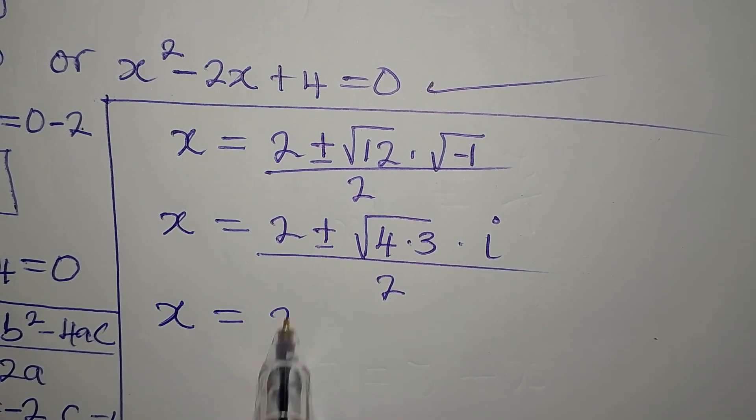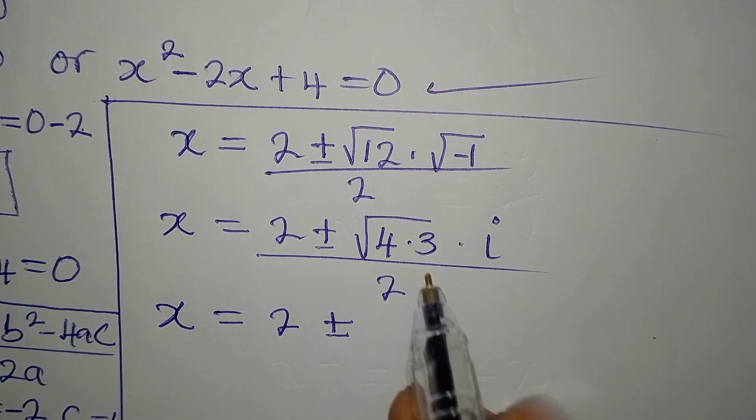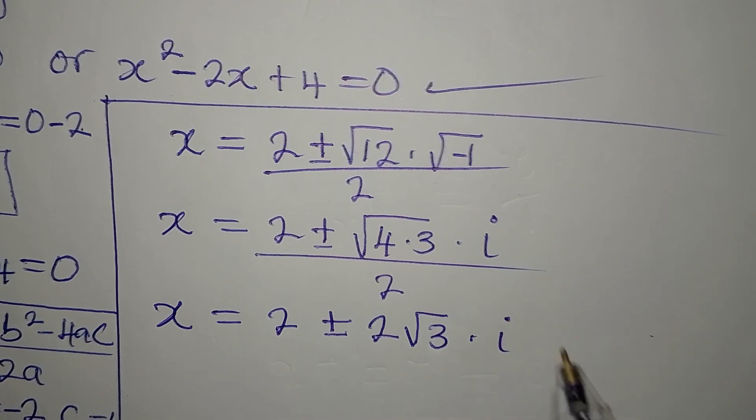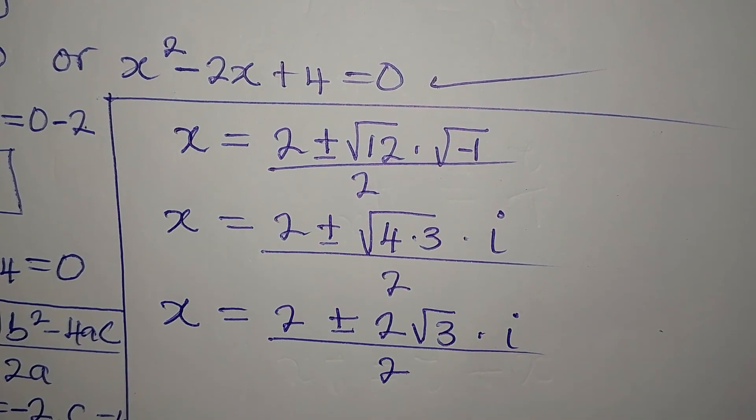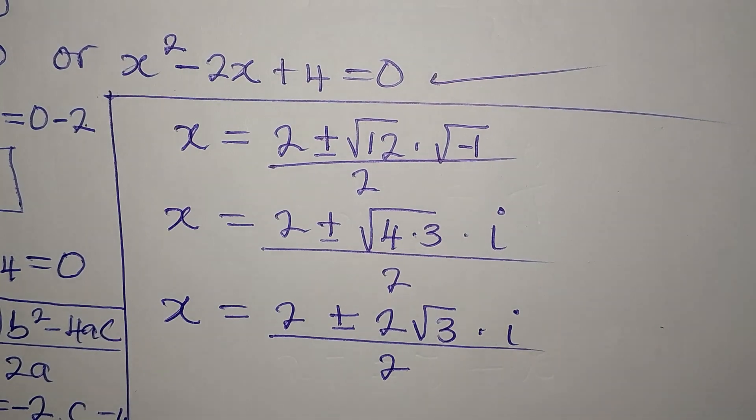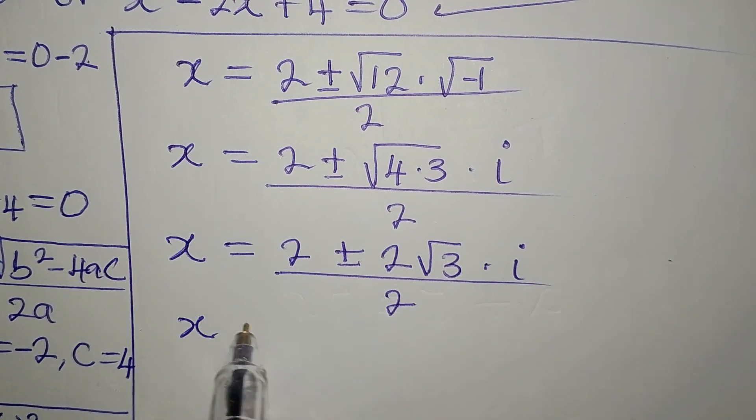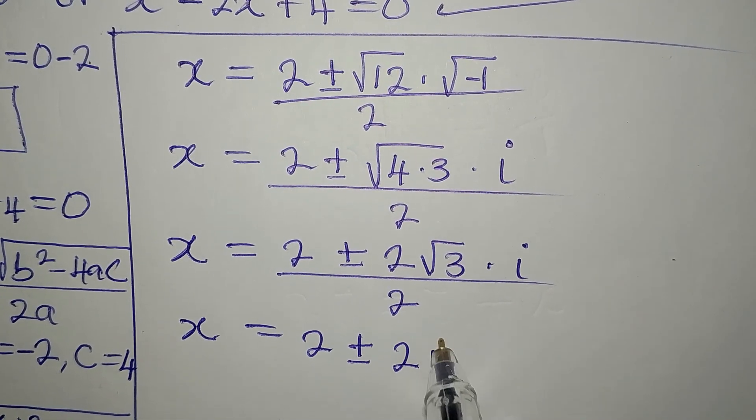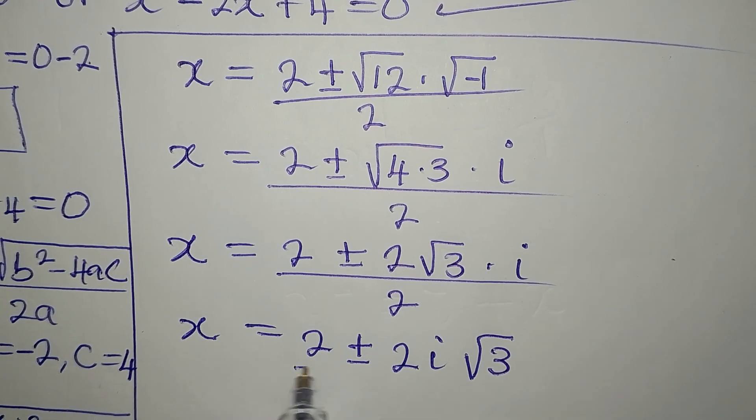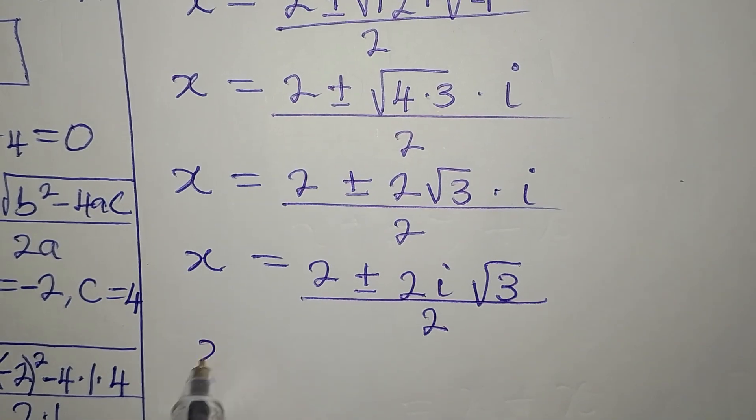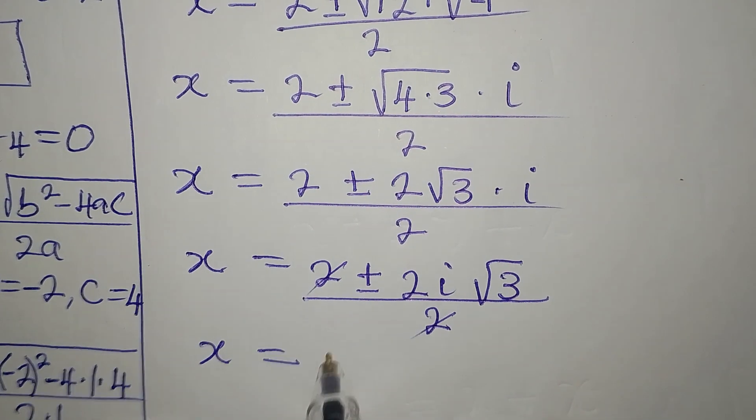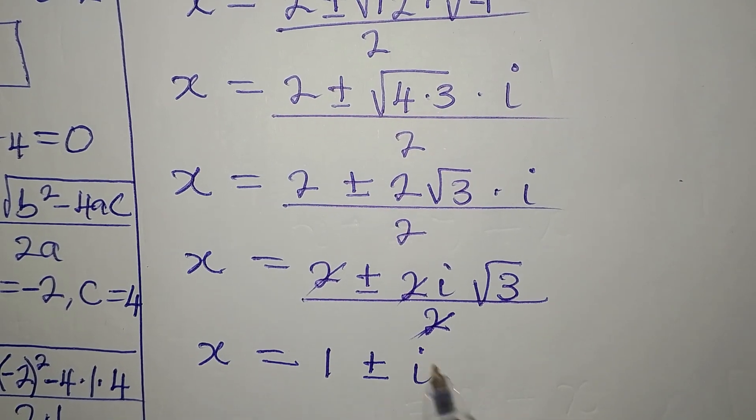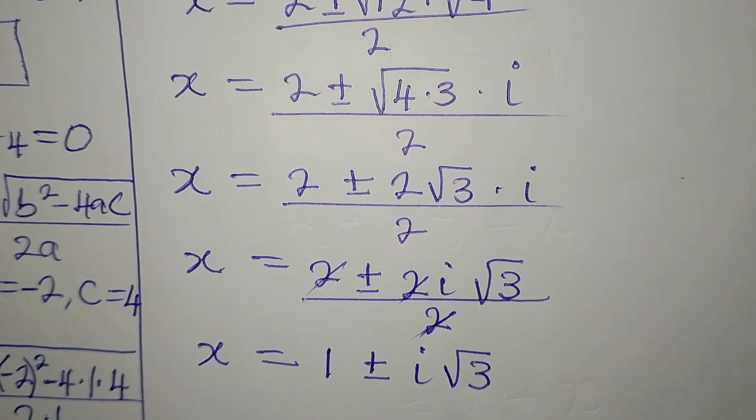So x will now be 2 plus or minus square root of 4 is 2. Then we have root 3, multiply by i, divide by 2. Remember, root 3, 3 here is not a perfect square. So it has to come down. Then our x from here will be 2 plus or minus, we have 2 times i, that will be 2i. Then we have root 3, divide by 2. So our x will now be, 2 will go there, 2 will go there, we have 1 plus or minus, the same 2 will go here, and we'll have just i, then root 3.